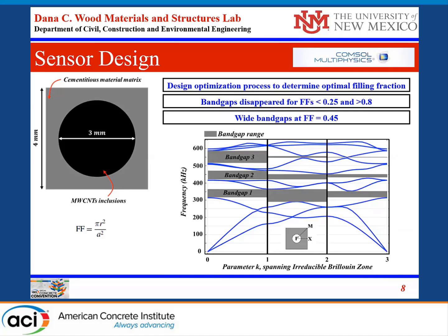Coming to the sensor design, COMSOL Multiphysics was used to achieve a sensor design based on a detailed design optimization process to determine the optimal filling fraction — meaning how much of the inclusion material should occupy the surrounding matrix. It was decided that for an optimal filling fraction of 0.45, wide band gaps were achieved, which could promote the quality of the wave itself. We went with three millimeter diameter inclusion cylindrical cells and a side of four millimeter diameter cement matrix. Three major band gaps were achieved from this design, with the frequency ranges shown in the green-gray color areas.